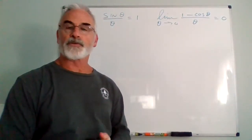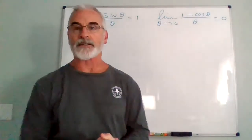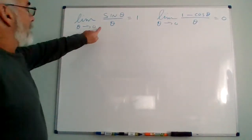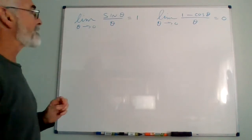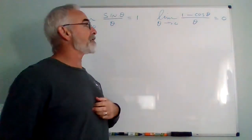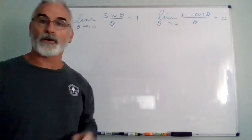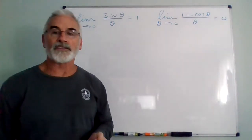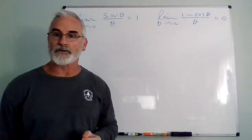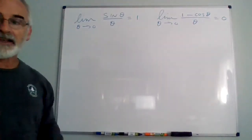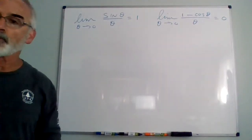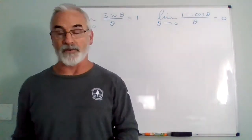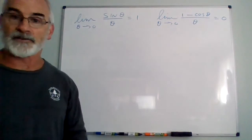We want to go over the solutions to the trig limit worksheets posted on Canvas. Starting with these two basic rules: the limit of sine theta over theta as theta goes to zero, and the limit of one minus cosine theta over theta as theta goes to zero. These are facts we've proved, and our goal in any limit statement involving trig is to get one of these into the statement, then evaluate directly using rules like the limit of a sum is the sum of the limits, and the limit of a product is the product of the limits.